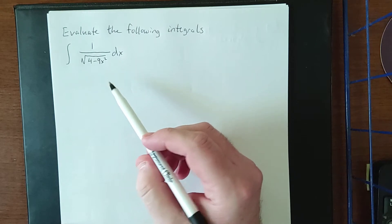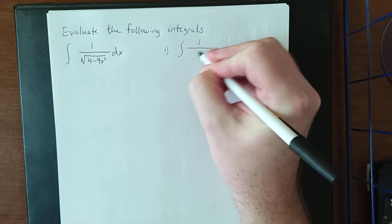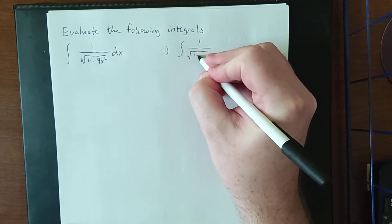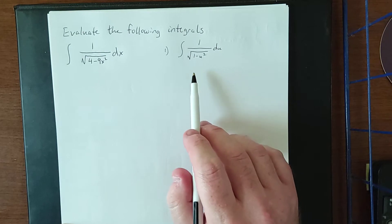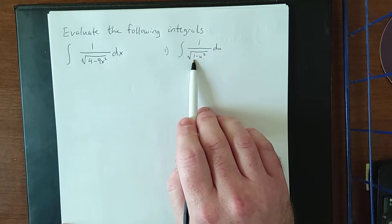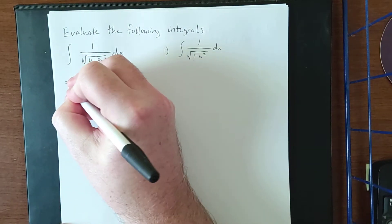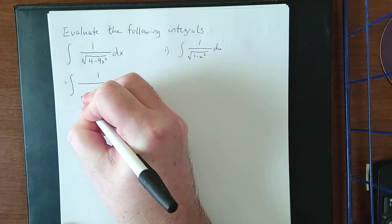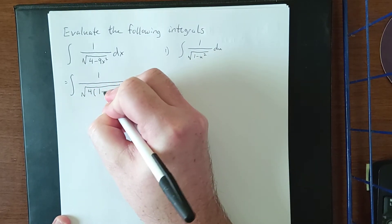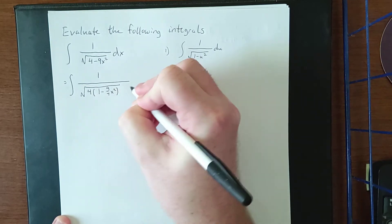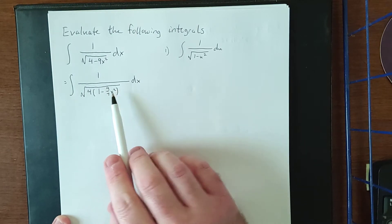We're going to use two different strategies for this one. The first strategy is to get this into the form 1 over the square root of 1 minus u squared du, where u is a carefully selected substitution. This relies on getting a 1 in that position — currently there's a 4 there, so we factor out a 4. Factoring out a 4 turns this into 1 minus 9x²/4 under the radical.